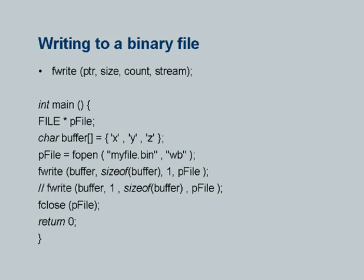We shall see the use of these commands in an example I have constructed. In exactly the same way, you can write to a binary file through the fwrite command. In fwrite, the meaning of all the parameters is exactly the same. Here is an example: file star pphile, char buffer equals x, y, z.